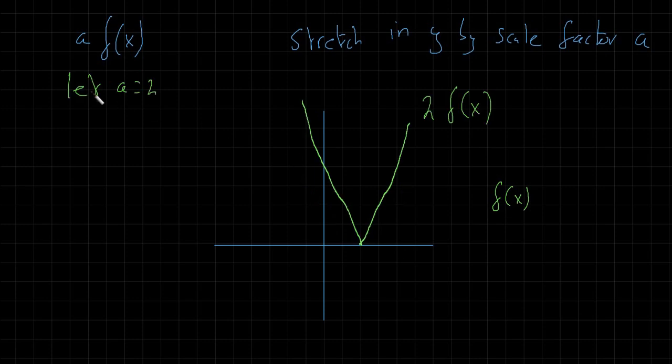Okay so here we've let a equal 2 so we have 2 f of x. And if you look carefully we've stretched by a scale factor of 2 in the y direction. But the x value here and all the x values have stayed the same. So any point on the graph before has now doubled in the y direction and stayed the same.